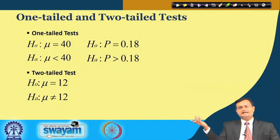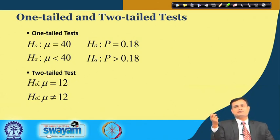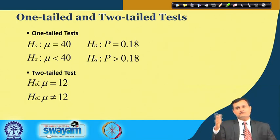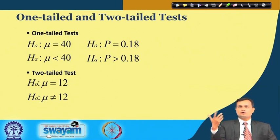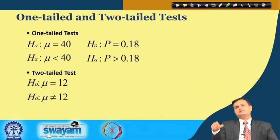I can have a one-tailed or two-tailed test. In a one-tailed test, I'm concerned only with either the higher or lower side. For example: H₀: μ = 40 and Hₐ: μ < 40 means I only care about values below 40. In a two-tailed test — H₀: μ = 12 versus H₁: μ ≠ 12 — I explore both sides of the distribution.